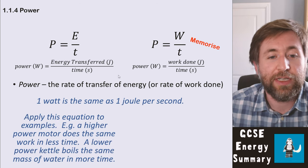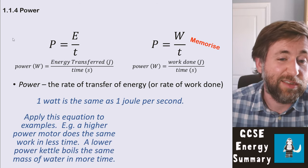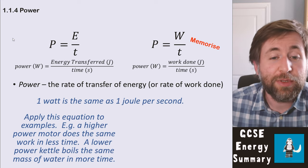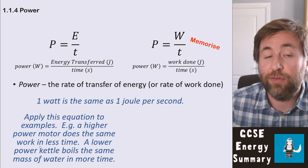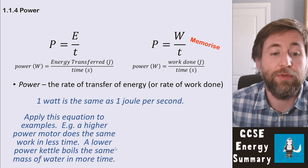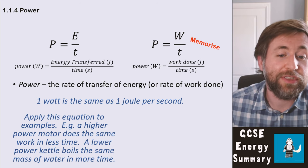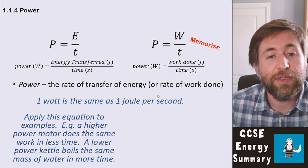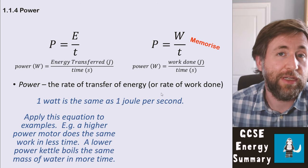Let's think about applying that into a descriptive question. Something with a higher power does the same amount of work in less time. Something with a lower power maybe boils the same mass of water in more time. So power is the rate of energy transfer—how quickly do you do work.